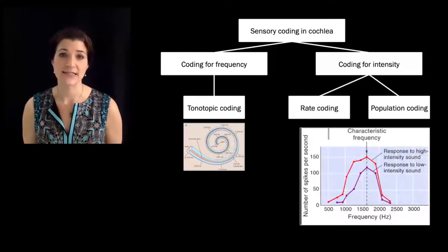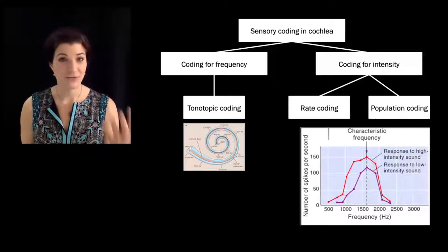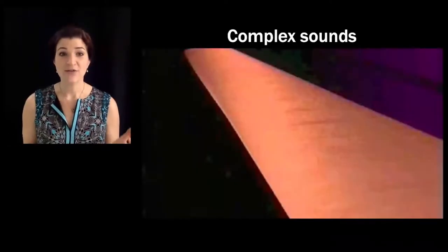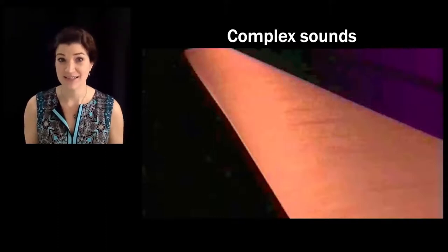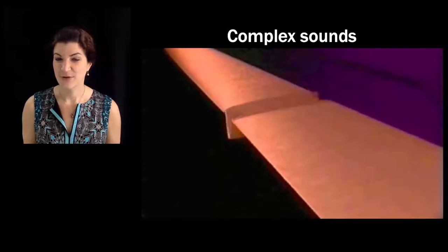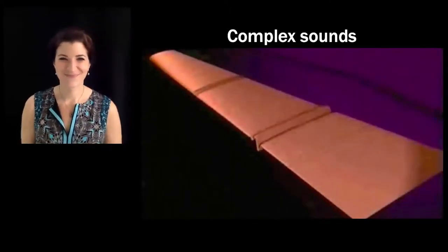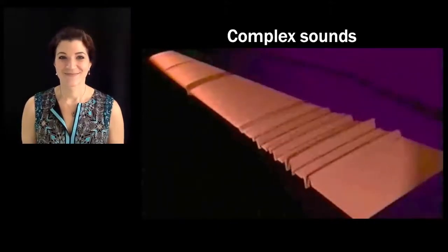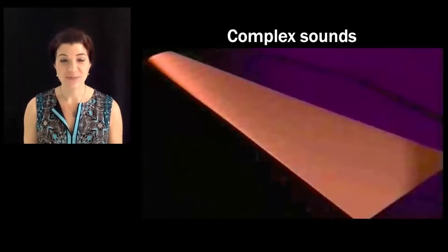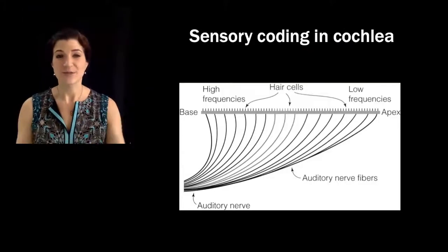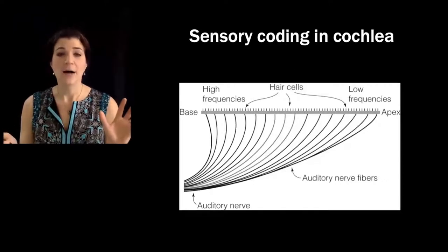This is how we code for frequency and intensity. But most sounds we hear are not pure tones activating one region of the basilar membrane — typically we are hearing many frequencies at once. So we're going to combine what we discussed last time about complex notes, harmonics, and fundamental frequencies with what we've talked about today. Let's see how the basilar membrane responds to complex notes that are full of harmonics — different regions are responding in different ways simultaneously.